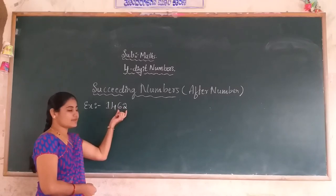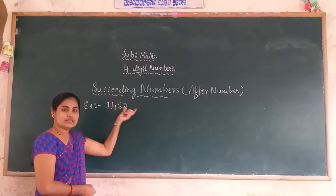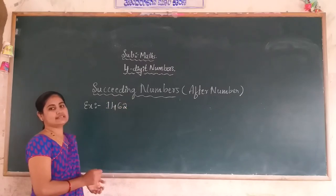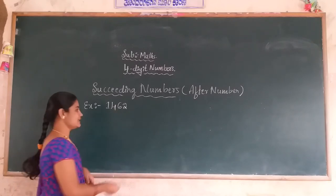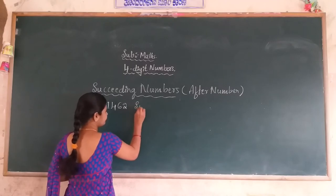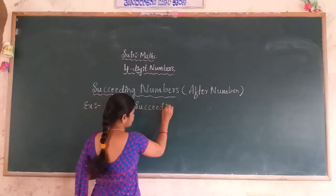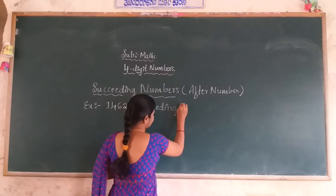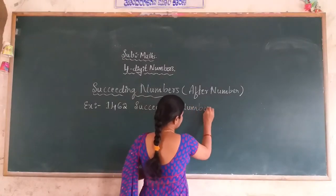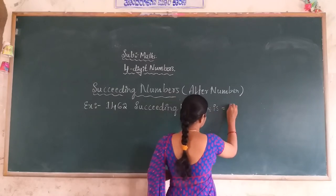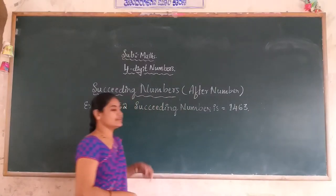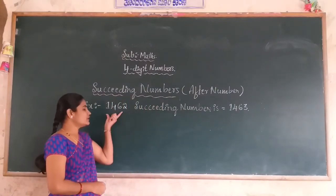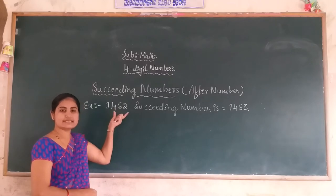The tens place has 6 and the unit place has 2, giving us 62. What is the next number of 62? 63 is the next number. Therefore, the succeeding number of 1,462 is 1,463.